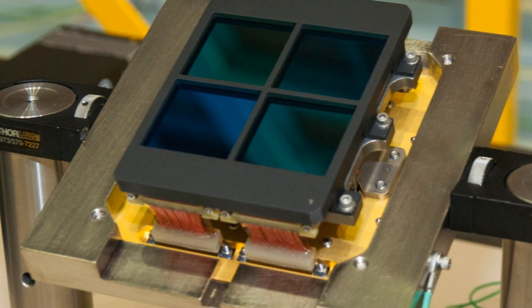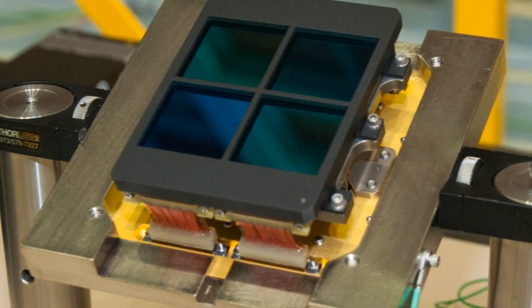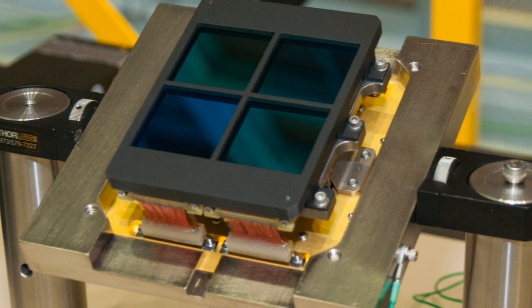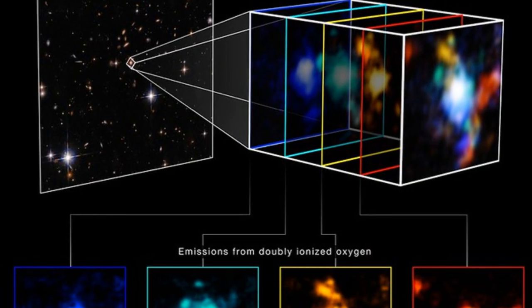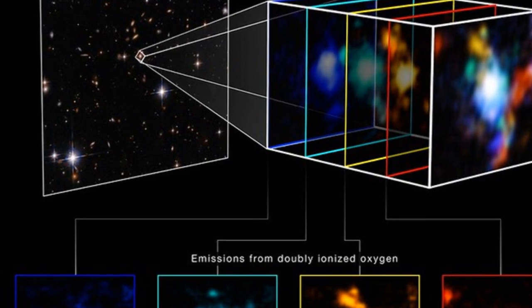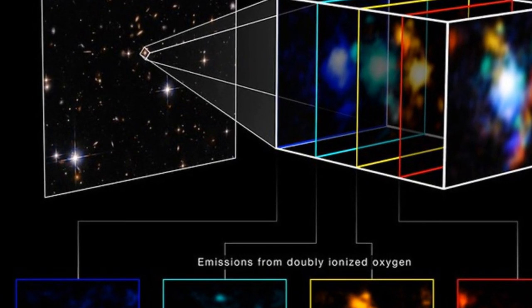These instruments operate at incredibly cold temperatures, colder than the dark side of the moon, to ensure they can detect the faintest light from the most distant galaxies. Every image captured by the JWST is a treasure trove of information.